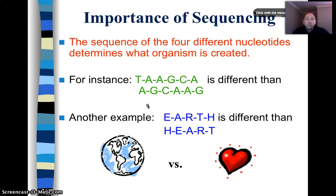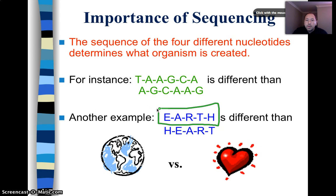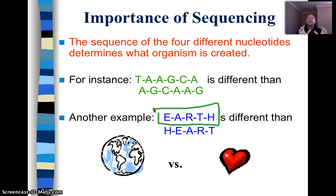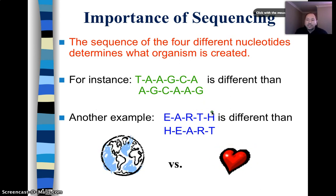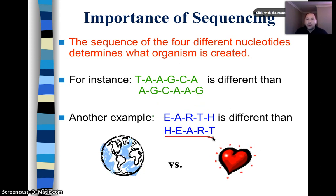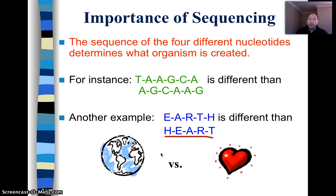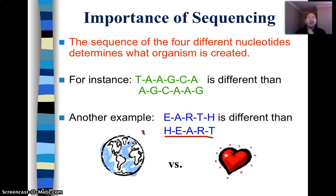Just as Earth and heart are made of the same letters arranged differently and represent completely different things — we don't live in our heart or break our Earth when love goes wrong — Earth is one thing and heart is another. It's the same thing with regard to proteins. The sequence matters enormously.